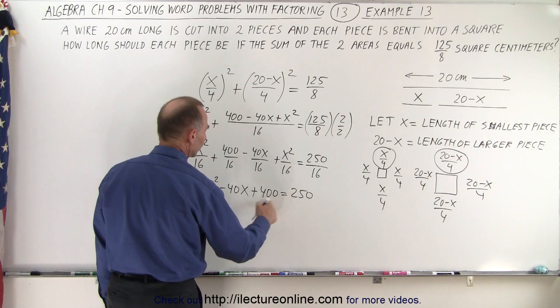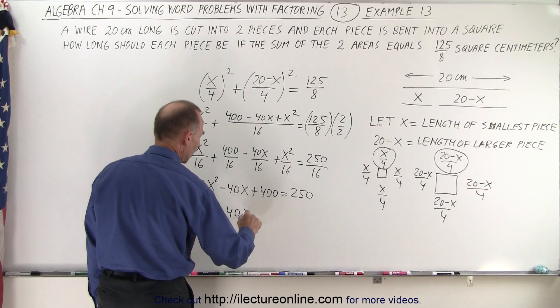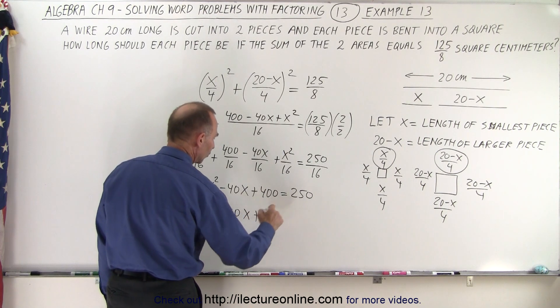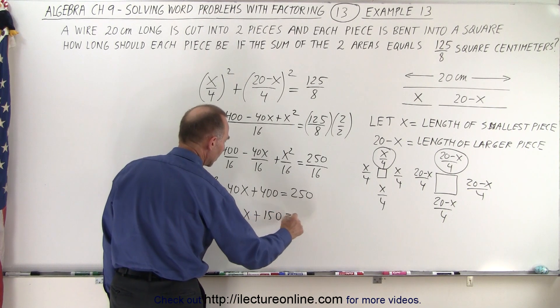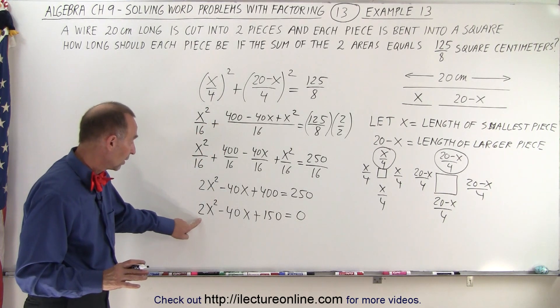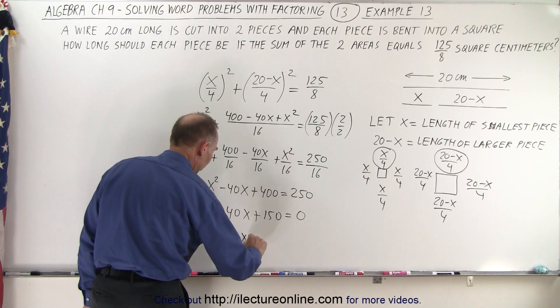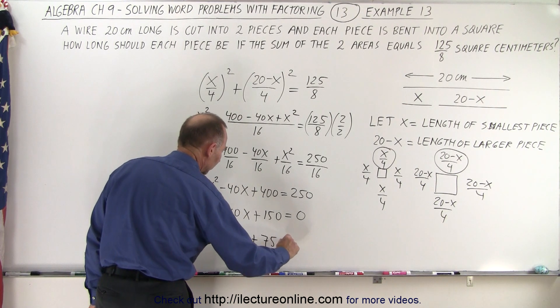And if we subtract 250 from both sides, we get 2x squared minus 40x plus 400 minus 250, which is 150, equals 0. And now we can divide both sides by 2 to get rid of the 2 in front of the x squared. So we get x squared minus 20x plus 75 is equal to 0.